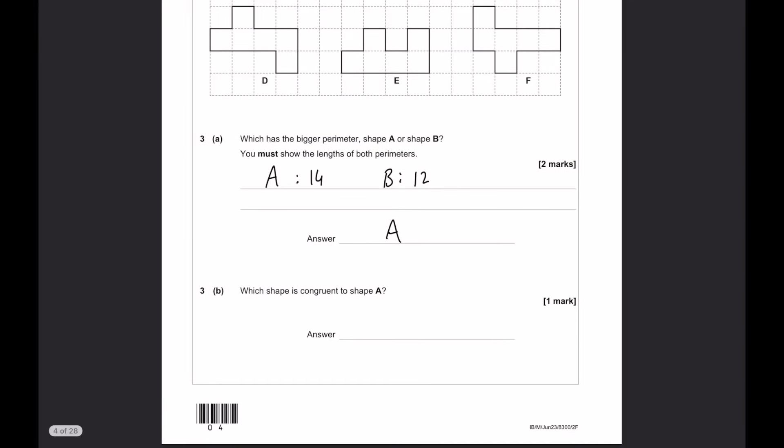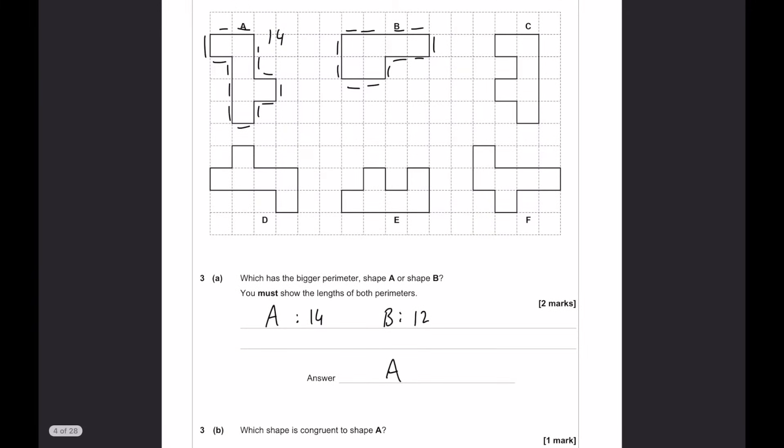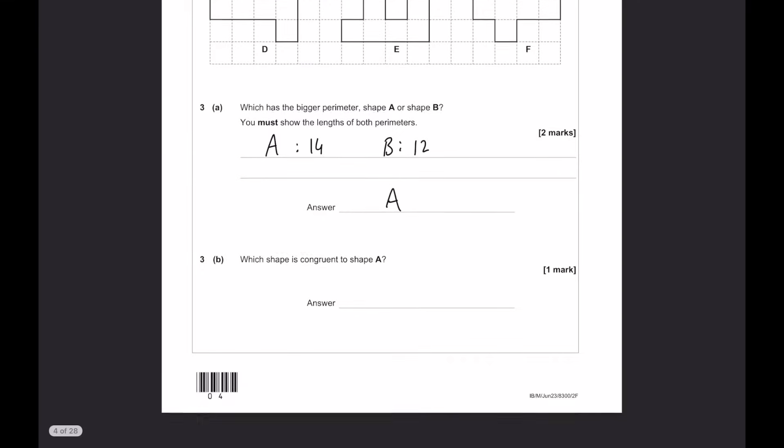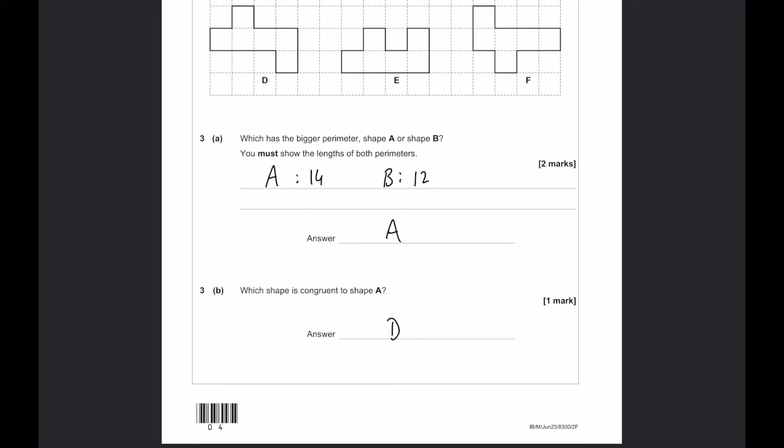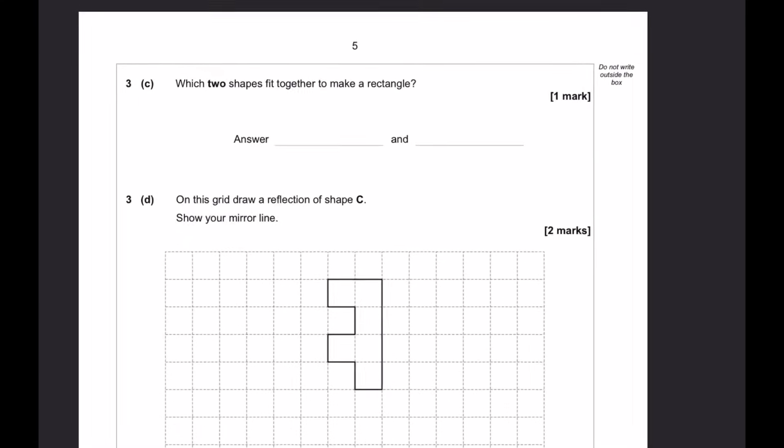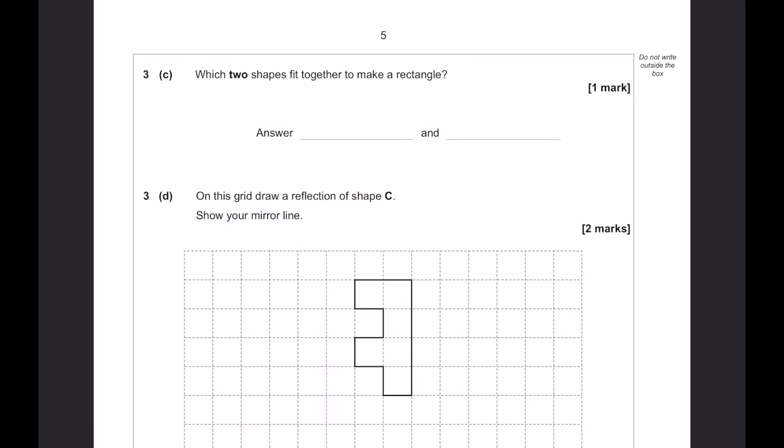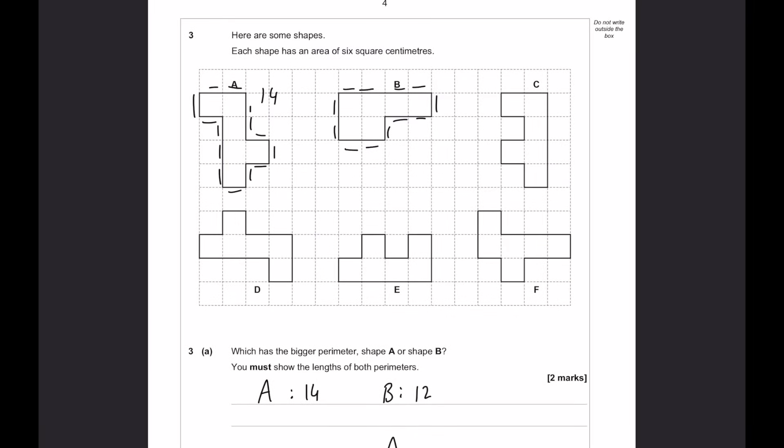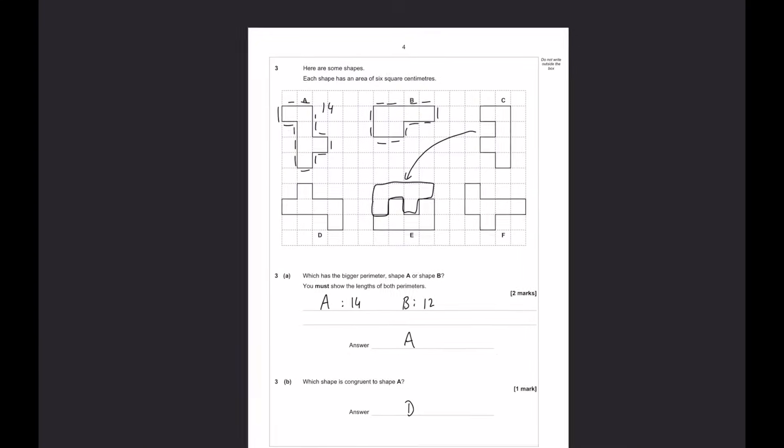Which shape is congruent shape a? Congruency means exactly the same. We can see, if we move them around a bit, you can see that a and d are the same. So, it's going to be d in this case. Which two shapes fit together to make a rectangle? Here you can see that if you put c on top of e, then they will fit in together like this. And so, it's c and e.